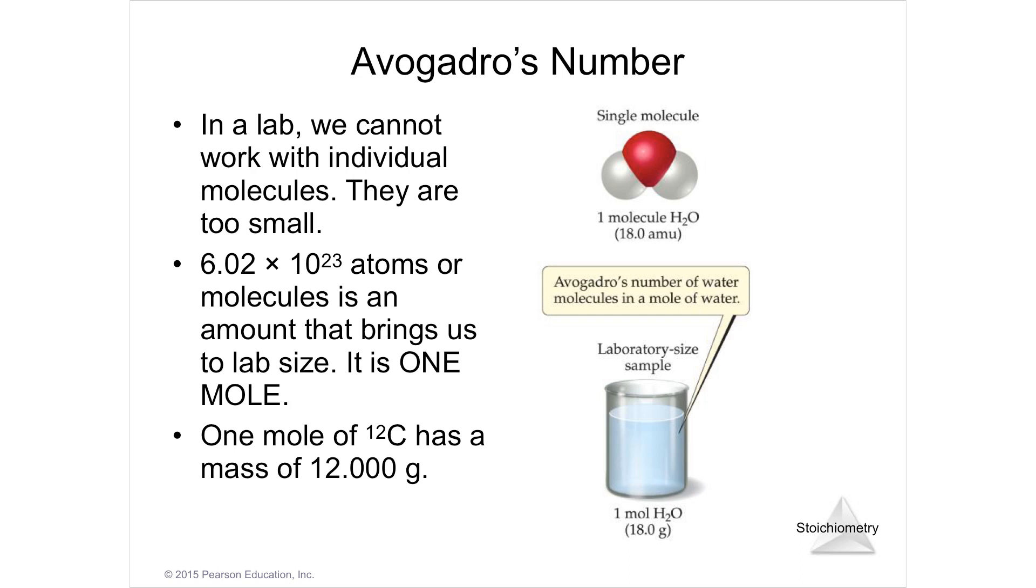Avogadro's number is 6.02214 times 10 to the 23rd atoms. That is a 6 with 21 zeros after it. It's more than 600, it's more than 6 million, it's more than 6 billion or trillion or quadrillion. It's so big.